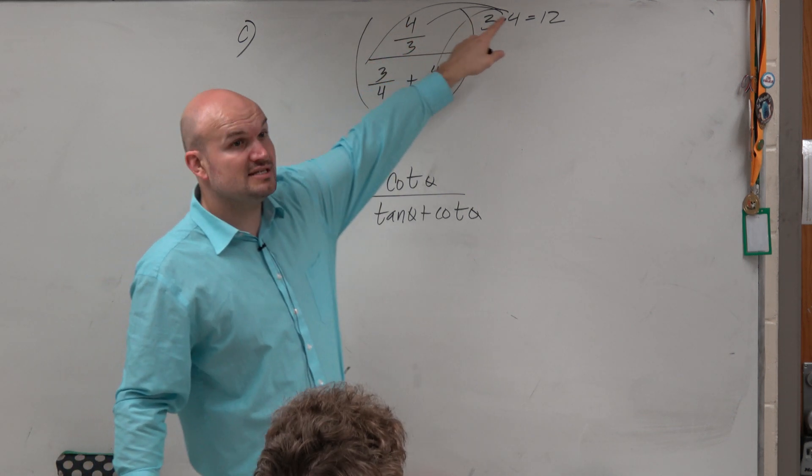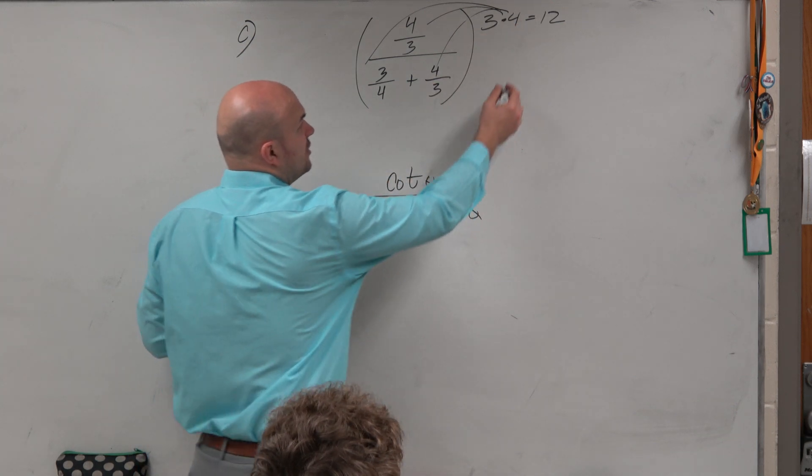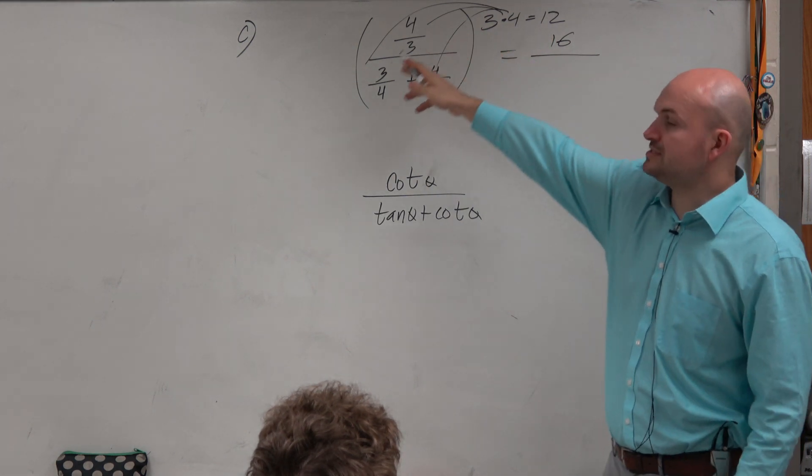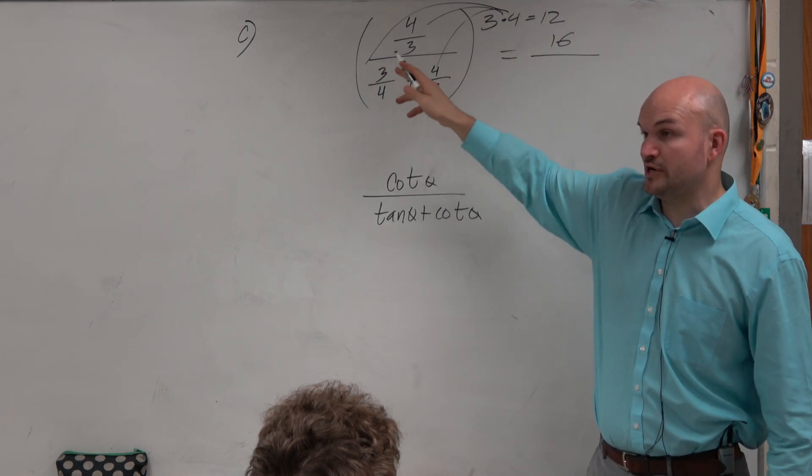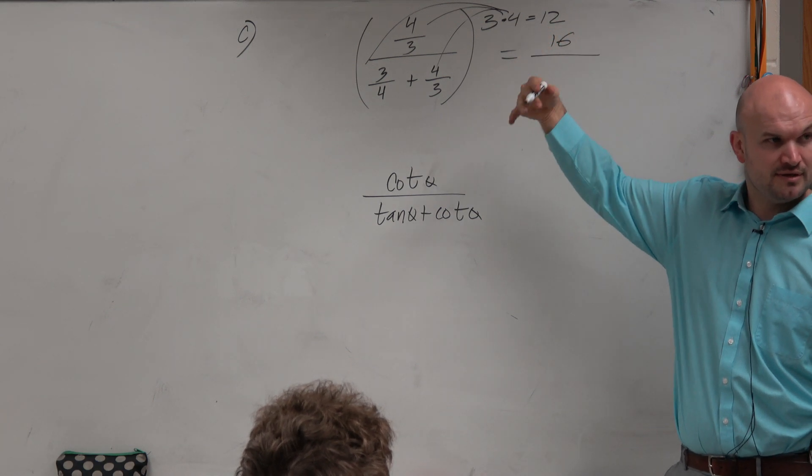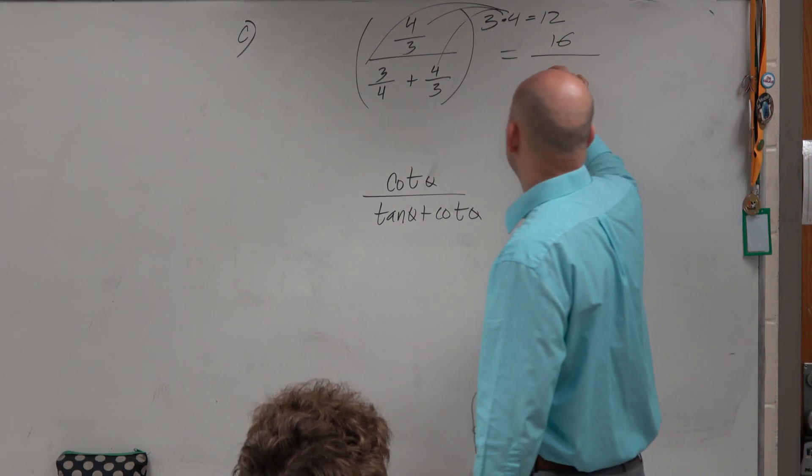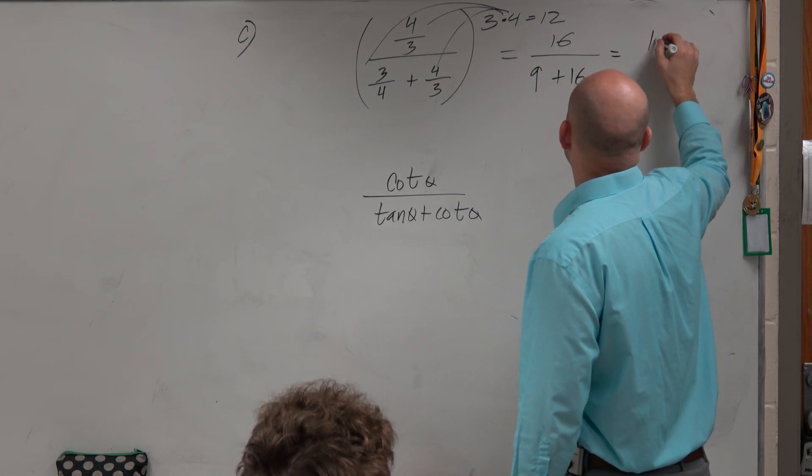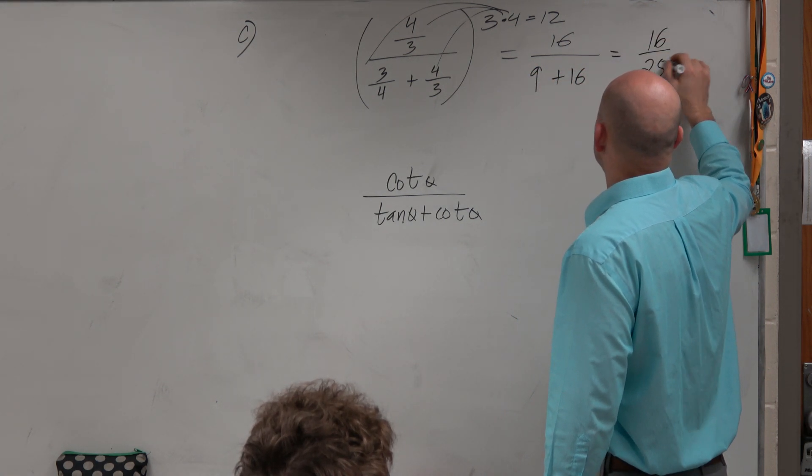So you're just left with 4 times 4, which is 16. When you multiply 3 times 4 times 3 over 4, the 4's would divide out, and you're just left with 3 times 3, which would be a 9. And then this is again 16. So therefore, you're left with 16 over 25.